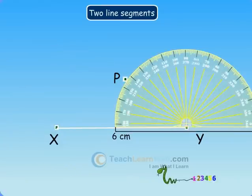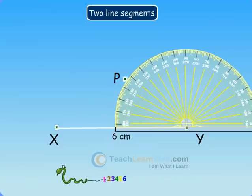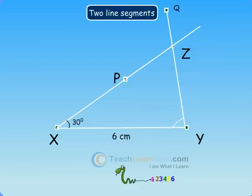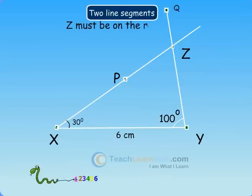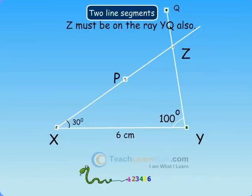At Y, draw a ray YQ making an angle of 100 degrees with YX. By the given condition, Z must be on the ray YQ also.